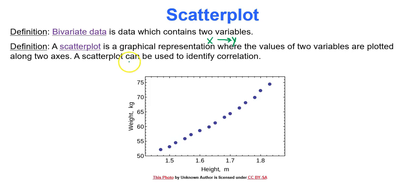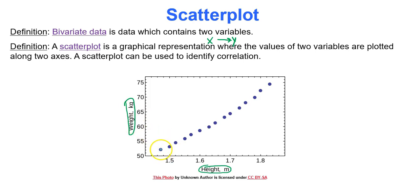One way to look at the relationship between these two variables is to create a scatterplot — a graphical representation where the values of the two variables are plotted along two axes. The scatterplot can be used to identify correlation. For instance, if you look at height in meters on the x-axis and weight in kilograms on the y-axis, every point represents the height and weight of one person. Notice this nice trend: as height increases, weight increases, and it's almost a neat line. That's what we mean by linear correlation.